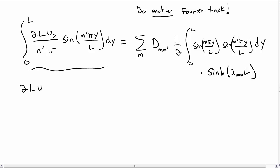The left hand side is simple, it's just a constant times another constant, 2L/(m'π) when m' is odd and it's zero when m' is even. The integral on the right hand side again you get zero if m is not equal to m', and you get L/2 if they are equal.